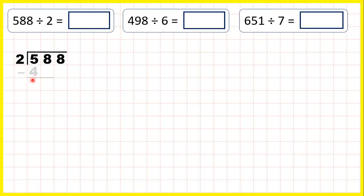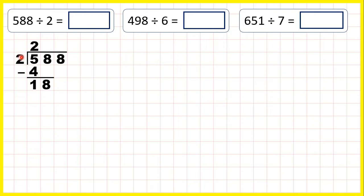The closest number in the 2 times table is 4, so we write 4 underneath the 5. And because 4 is 2 times 2, we write 2 in our answer line. Now we subtract and bring down: 5 minus 4 is 1, and we can bring down the 8, so we have 18 divided by 2.